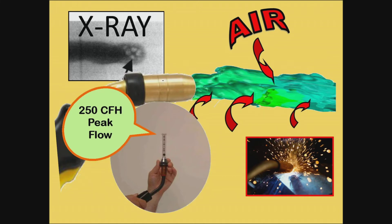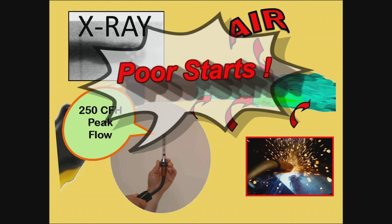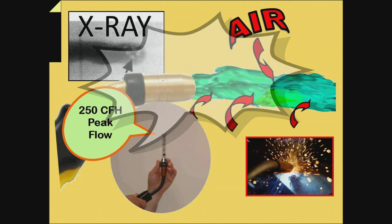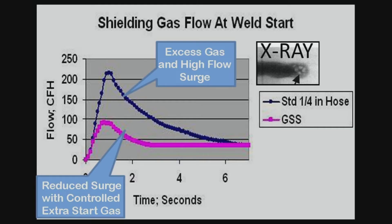For short welds, that poor quality may last for much of the weld. Weld starts at a repair station were often being rejected due to porosity. The welder was sure the gas blast was the cause. After installing a Gas Saver System, the welder said the starts were much better. The chart shows the peak flow was reaching 225 cfh and was over 100 cfh for about three seconds. With the Gas Saver System, the peak flow was under 90 cfh and quickly under 50 cfh.